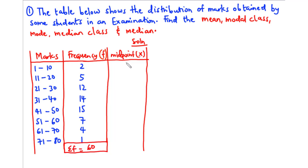To find the midpoint, we find the average of the lower limit and upper limit of each interval. For the first interval, 1 to 10: 1 plus 10 is 11, divided by 2 gives 5.5. For the second interval: 11 plus 20 is 31, divided by 2 is 15.5.